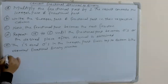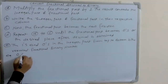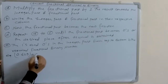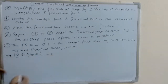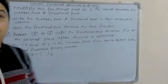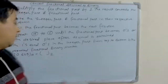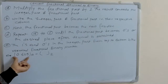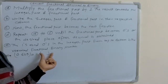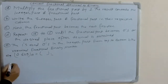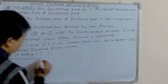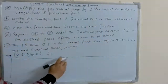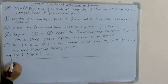Now let's take the example: 0.625 decimal equals how much in binary number system? Convert this fractional decimal to fractional binary. Now let's draw the table, which makes it easy.